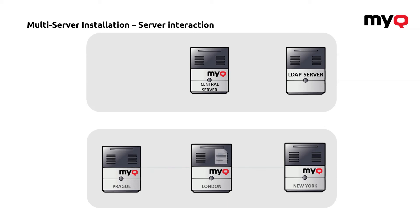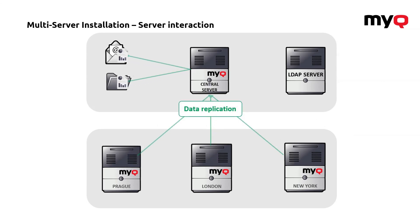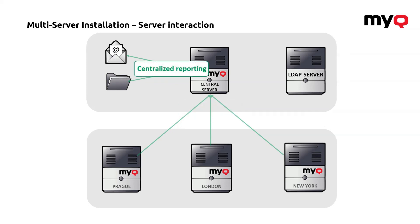The next way of interaction is job roaming. As we will explain in another video, the sites are able to share print jobs. So if you have a user that travels among the sites, they will be able to download print jobs that were sent to a different server and print them locally. The last really important thing is replication — the central server automatically replicates all the data of each individual site to provide centralized reporting. There are quite a lot of things these servers are doing, but each of those will be explained in an extra video which follows after this one. Thank you for watching, and let's see each other at another video about the multi-server installation.